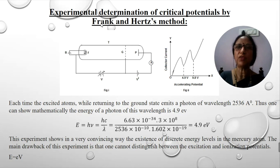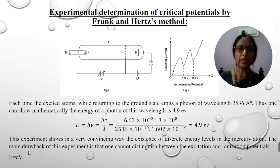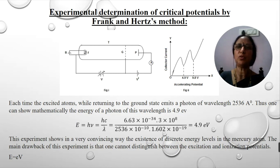This is how Frank and Hertz were able to determine the excitation, that is, critical potential. The experiment demonstrates in a very convincing way the existence of discrete energy levels in the mercury atom. The main drawback of this experiment is that it is not possible to distinguish between the excitation potential and the ionization potential. Otherwise, this experiment convincingly explains how to determine the critical potential.